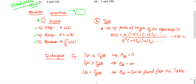In exams, one of these three inputs will be asked. Step input is A·u(t), which is like t power 0. Ramp input is A·t·u(t), which is t power 1. Parabolic input is A·(t²/2)·u(t), which is t power 2. So step → t⁰, ramp → t¹, parabola → t².